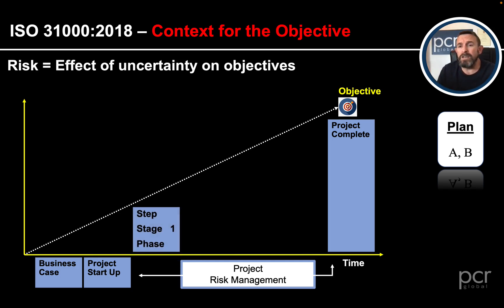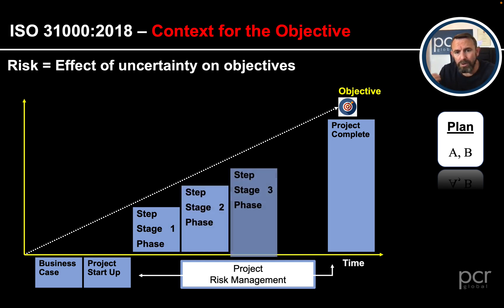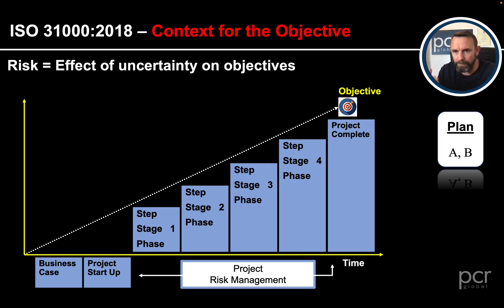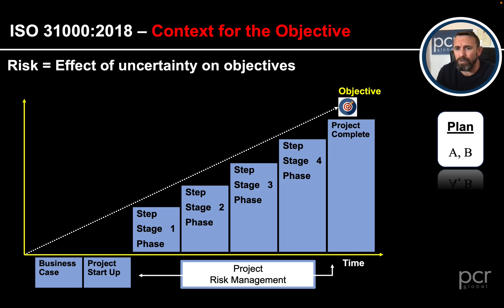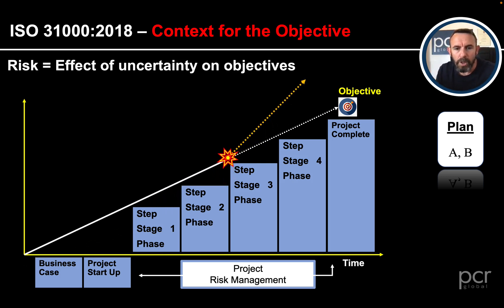In between project startup and completion we have various stages - let's call them stages one, two, three, and four. In the business case you decide if it's worth doing; in project startup you get your people, equipment, materials, tasks, and plans together. Then you go into the stages of the project, with stage boundaries where - before every stage starts - you review the risks, opportunities, threats, and issues before moving to the next stage.